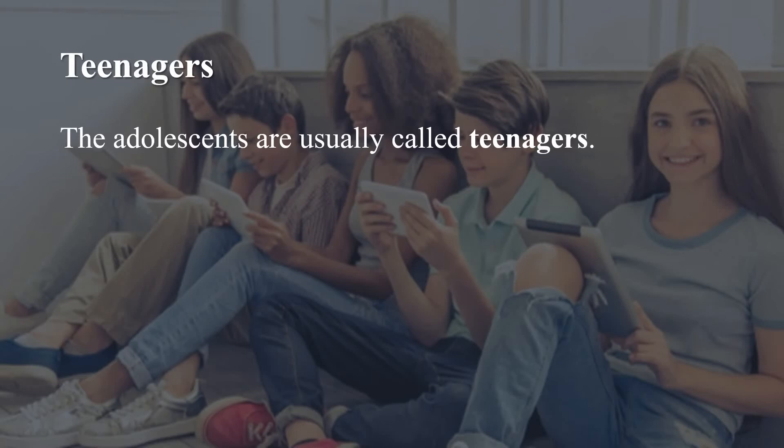Adolescence usually starts from the age of 11 years and lasts up to the age of about 18 to 19 years. Since adolescence covers the teen period, adolescents are usually called teenagers — meaning children of ages 13 to 19. During the teenage years, the body grows rapidly and many changes take place. These changes mark the start of puberty.